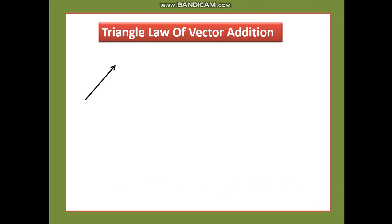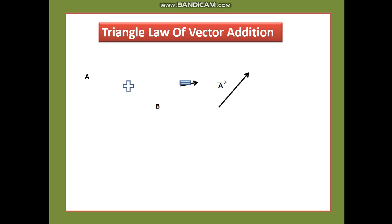Now let us see the triangle law of vector addition, used when vectors are not in the same or opposite direction. Consider vector A and vector B in different directions. To add them, take a vector parallel to A and place vector B such that the tail of one is at the head of the other, forming two sides of a triangle. Completing the triangle gives the resultant A + B.